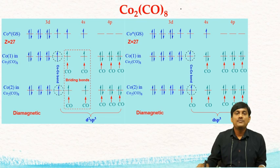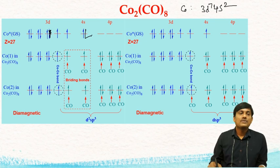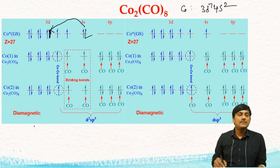Let us take the structure of Co₂CO₈ in detail. The electronic configuration of cobalt is 3D7, 4S2. In the presence of CO ligands, there is a rearrangement where one of the 4S electrons enters the 3D orbitals, giving an arrangement of 2, 2, 2, 1, 1, 1, with 3 empty p-orbitals. There is d²sp³ hybridization.